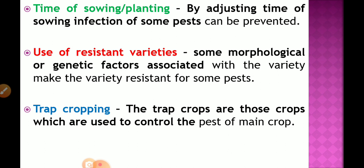If early planting is done — for example in the last week of June or first week of July — we can escape the susceptible stage of the crop from pest attack. The young plant can be established before the attack starts. For example, early sowing of kharif jowar helps to escape from the attack of jowar shoot fly. This method is called time of sowing or planting.